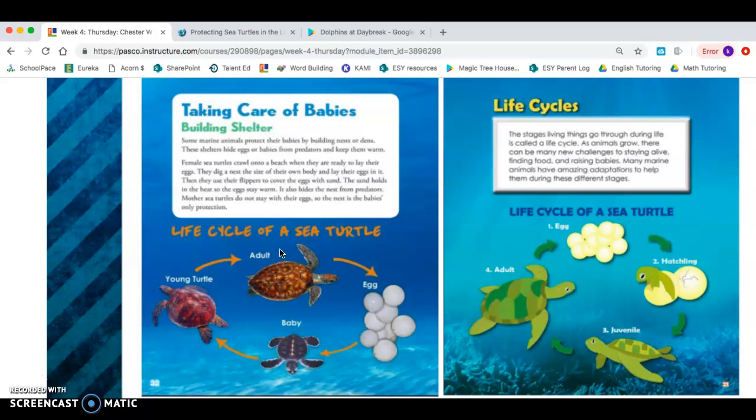Female sea turtles crawl onto a beach when they are ready to lay their eggs. They dig a nest the size of their own body and lay their eggs in it. Then they use their flippers to cover the eggs with sand. The sand holds in the heat so the eggs stay warm. It also hides the nest from predators.